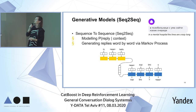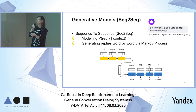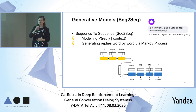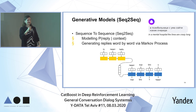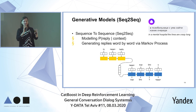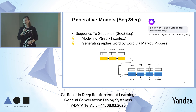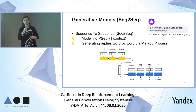Here's an example of a joke generated by our model — I translated it to the best of my English language capabilities: 'In a mental hospital, the lines are crazy long.' In Russian it was probably better. Generative models can produce brand new utterances that nobody has seen before — that's the main advantage. But that's also the main disadvantage, because some utterances can come out ungrammatical or offensive.